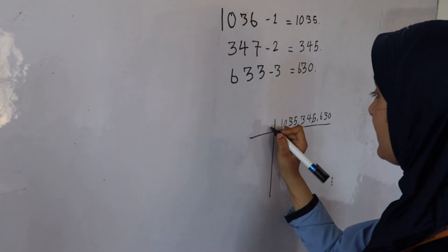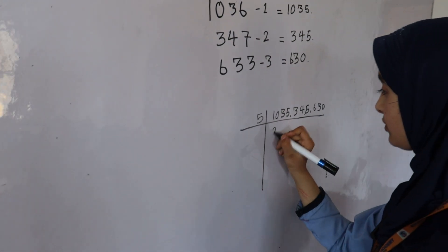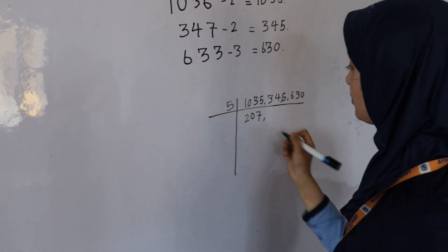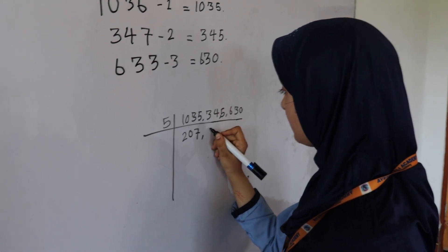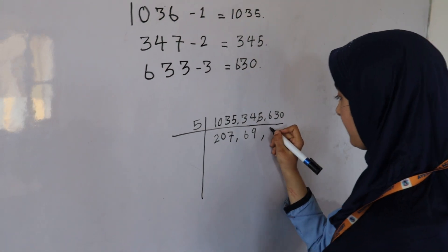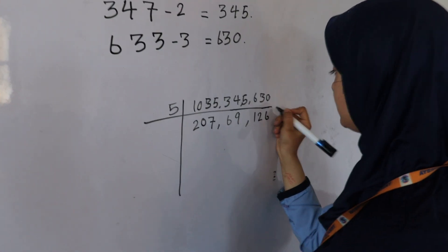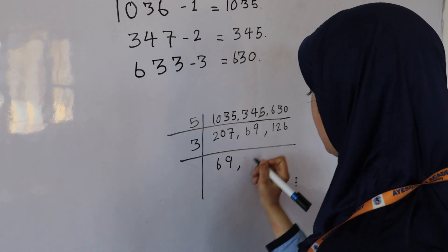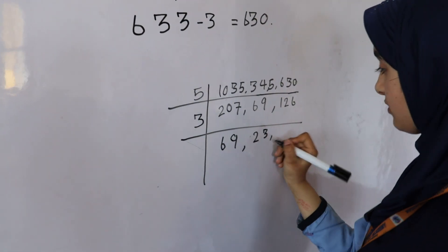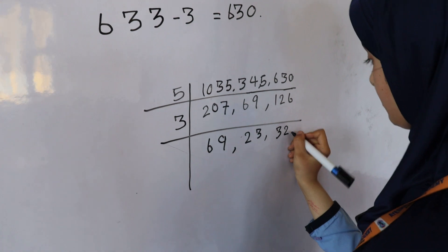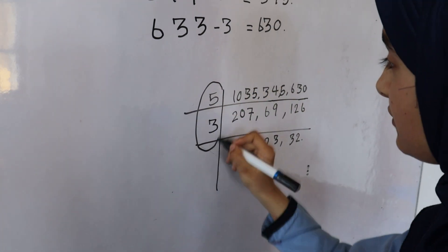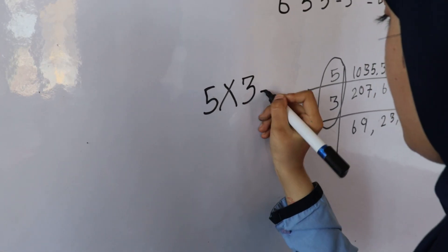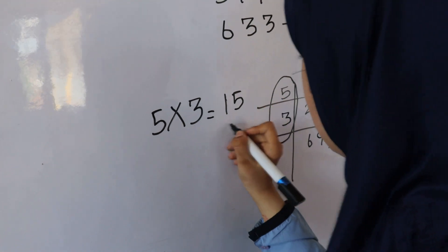First we will divide by 5. The quotient is 207, then 69, and here 126. Now we will divide by 3, giving 69 and 3. The numbers we get, we have to multiply them, and the answer we get is 15.